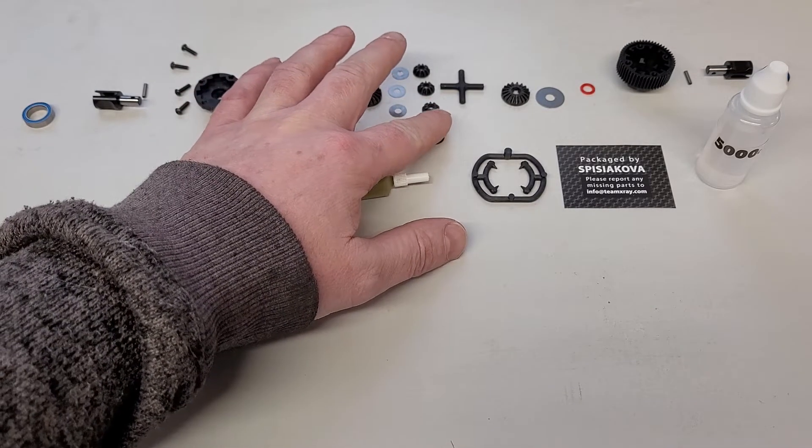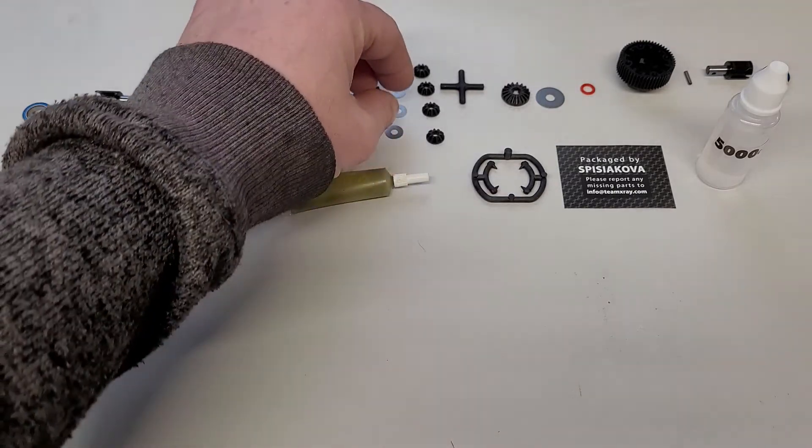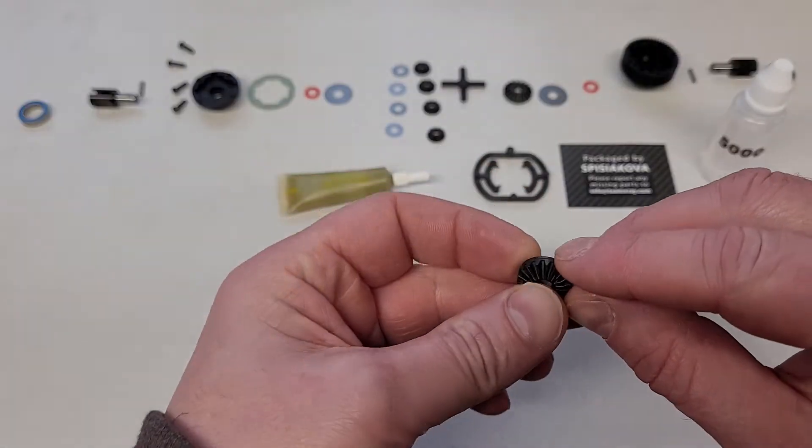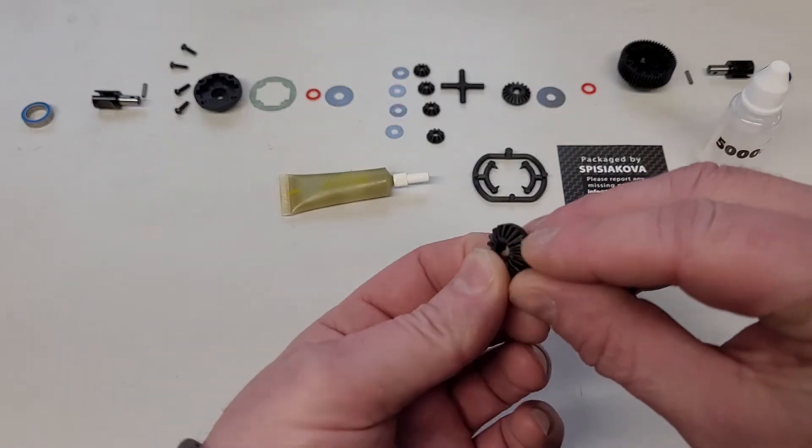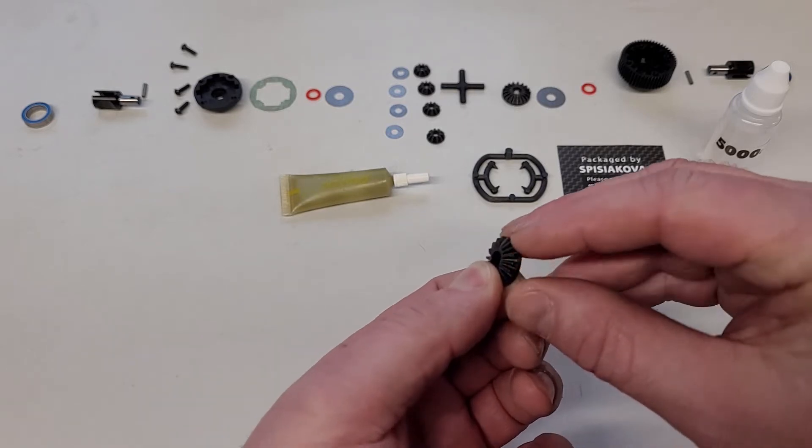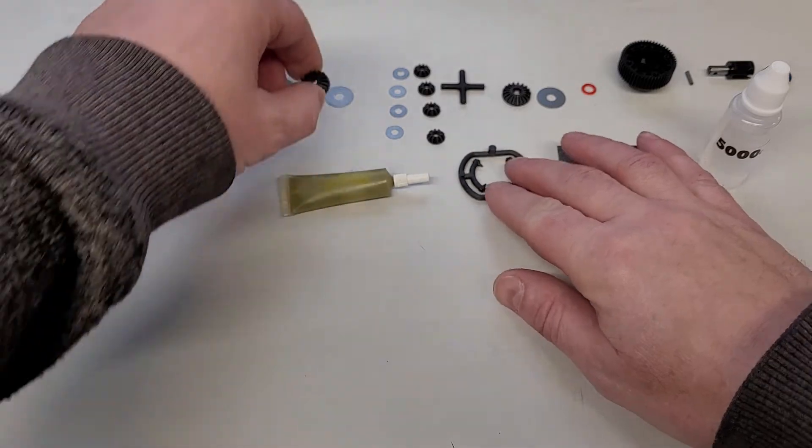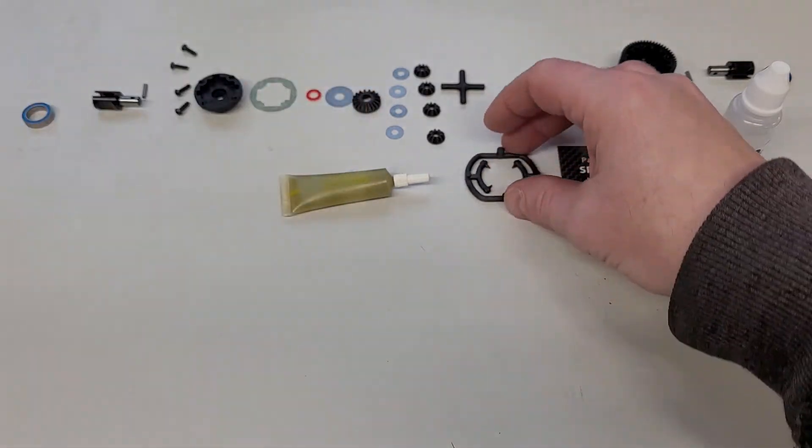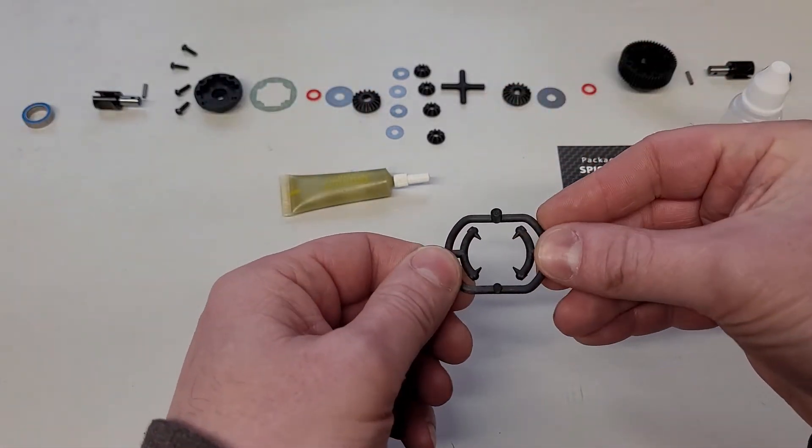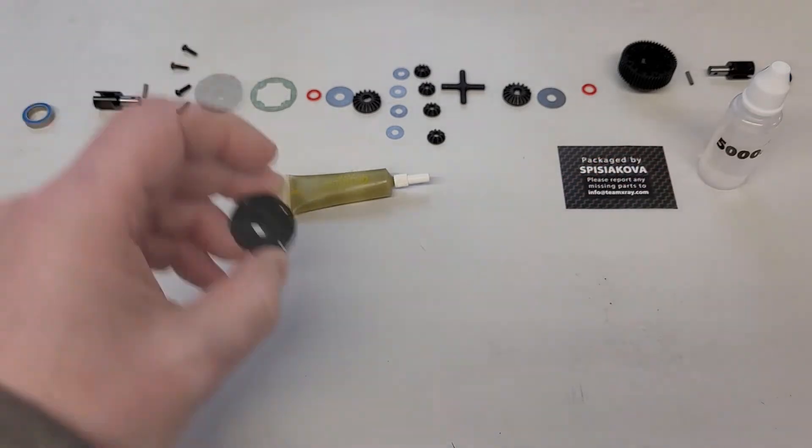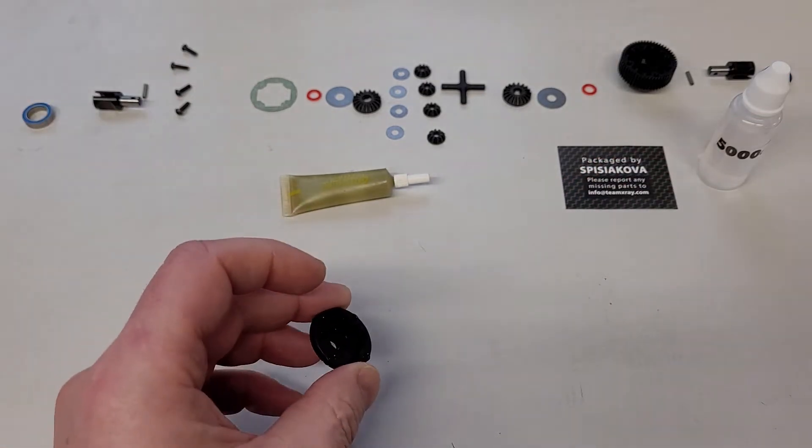The first thing you want to check is the plastic parts, particularly the gears, because they come out of sprues. Make sure there's no burrs on them, particularly around here. If there are, just take them off. Obviously your diff will not run smooth—that is very important. But the quality of parts now, it's very rarely a problem.